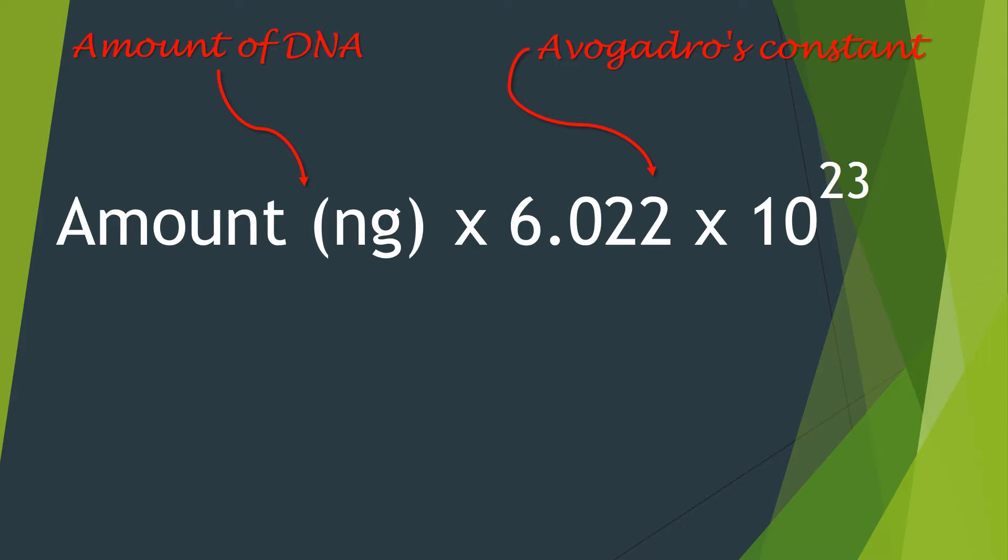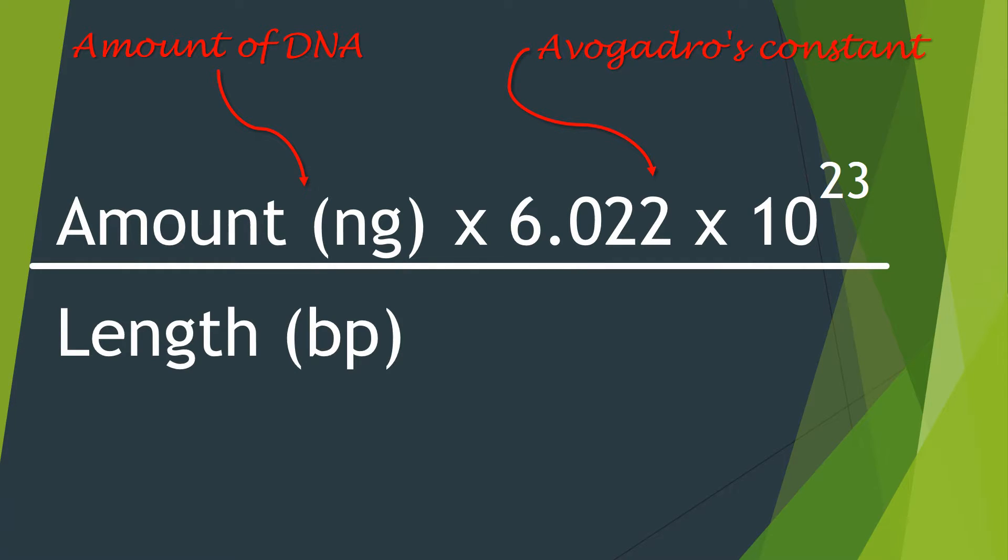And once done that you need to then divide all of this by the length of the DNA template. So this is another factor that you'll need to know in advance. So the length of DNA template in base pairs multiplied by 1 times 10 to the power of 9.